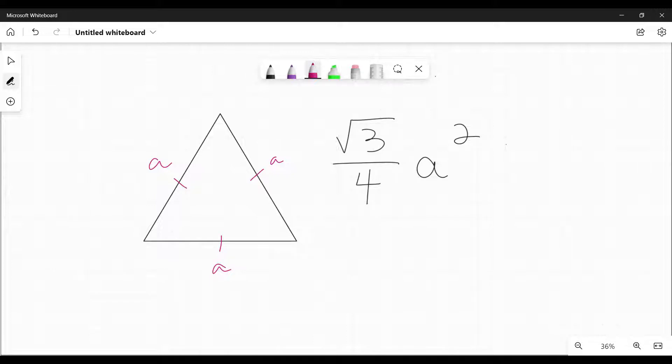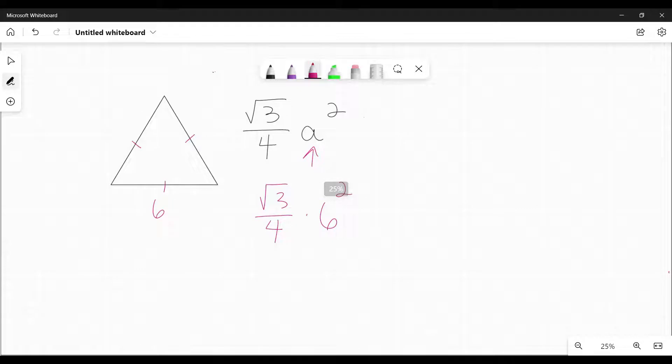So the way you use this is pretty straightforward. If I am told I have this equilateral triangle and let's say that it has a side of six, I'm going to plug that in for A. So it would be the square root of three over four times six squared. Scoot that over.